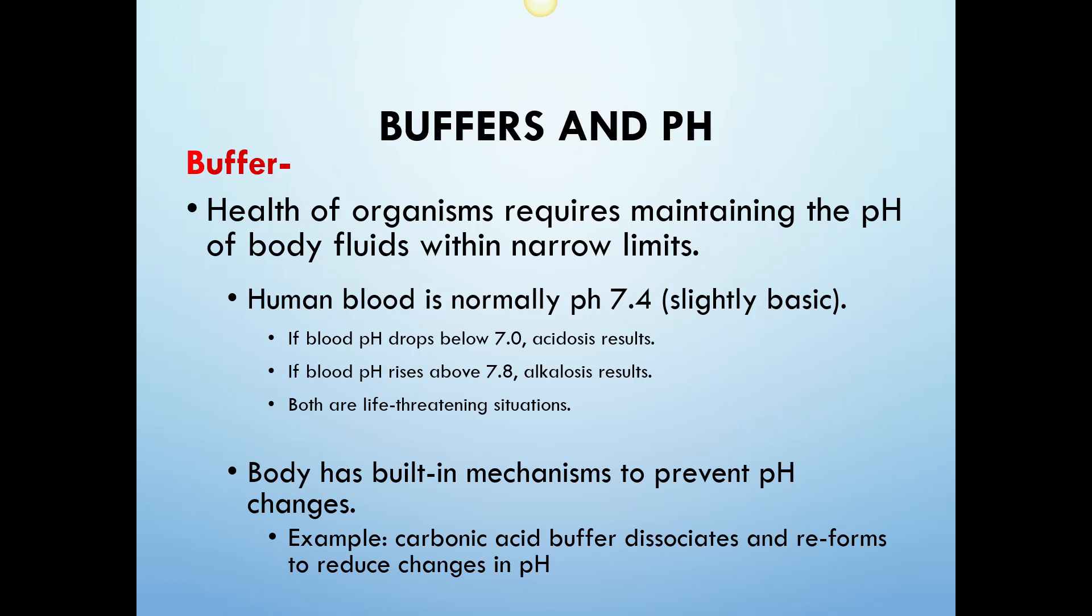Acidosis usually causes hyperventilations—you start breathing really fast to try to get carbon dioxide out of the body because it's usually due to an excess of carbonic acid that's built up. Alkalosis causes shallow breathing, and both of those can result in life-threatening situations. The body has built-in mechanisms to prevent pH changes. For example, carbonic acid buffer dissociates and reforms to reduce changes in pH.